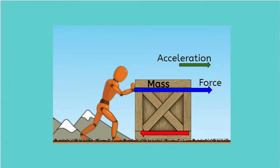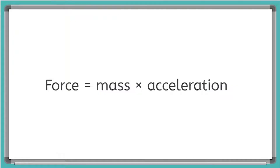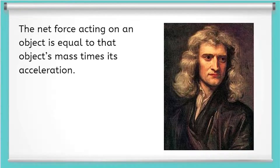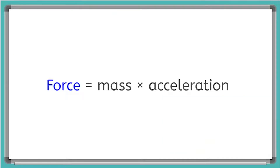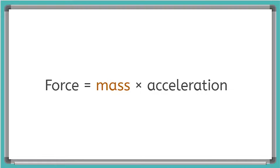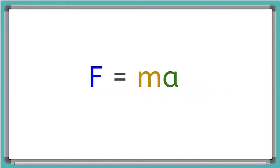Now there's a very special relationship between an object's mass, force, and acceleration. The force applied to an object is equal to the mass of the object times the acceleration of the object. This relationship is what Sir Isaac Newton declared as his second law: the net force acting on an object equals that object's mass times its acceleration. The force is the magnitude of the unbalanced force, mass is in kilograms, and acceleration is how fast the object is changing its velocity. We often write this in shorthand as F equals MA.